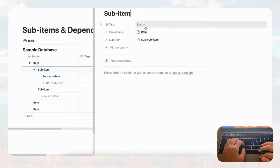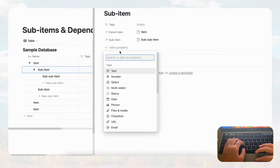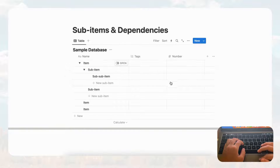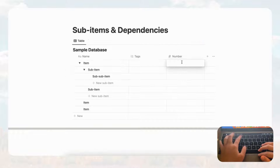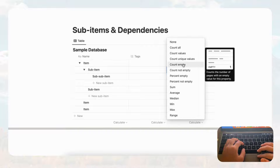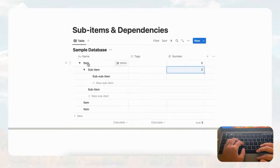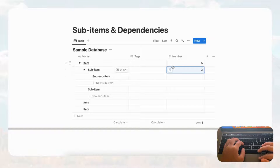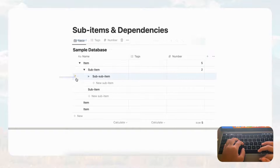For example, if we add another property like number, the sub item will also have that number property — it appears for everything. But what can be a little difficult is that if you put five here and two here and go to calculate to find the sum, it's only going to calculate the main item and not the sub item. So if you want to add those up, you actually have to do a roll-up, and we're going to show you that now.